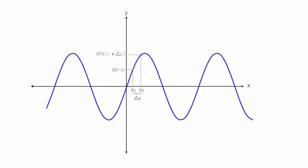The slope of any straight line is equal to rise over run. The rise turns out to be sine of x1 plus delta x, minus sine of x1. And the run is x2 minus x1, which is also the change in x, or delta x.